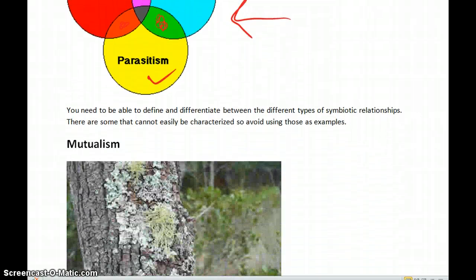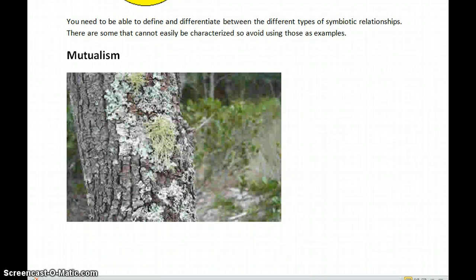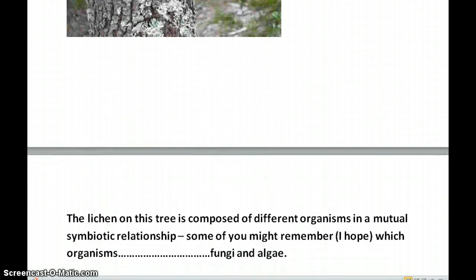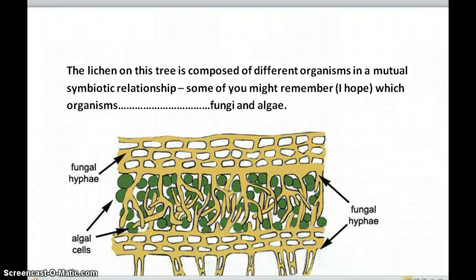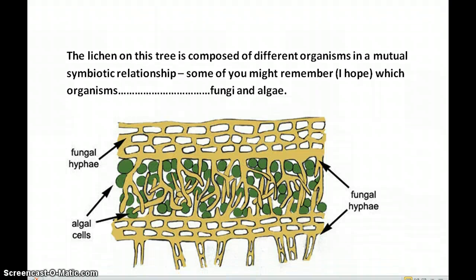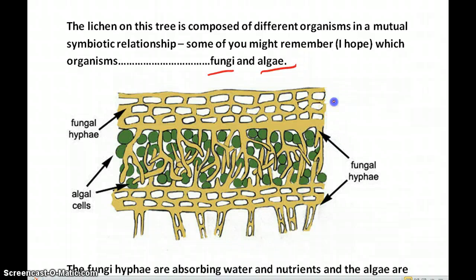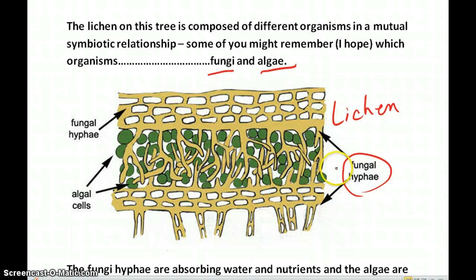The first we're going to start with is mutualism. Many of you will recognize what's growing on this tree — it's a lichen. It's composed of different organisms in a mutual symbiotic relationship. The definition of mutualism is that they both benefit. In this case, the mutualistic relationship is between a fungi and an algae. Here's a cross-section of a lichen. We see the fungal hyphae, thread-like structures, and embedded in here we have the individual algae.